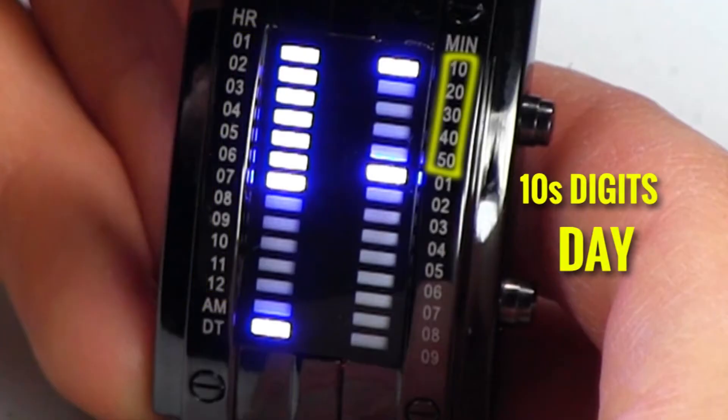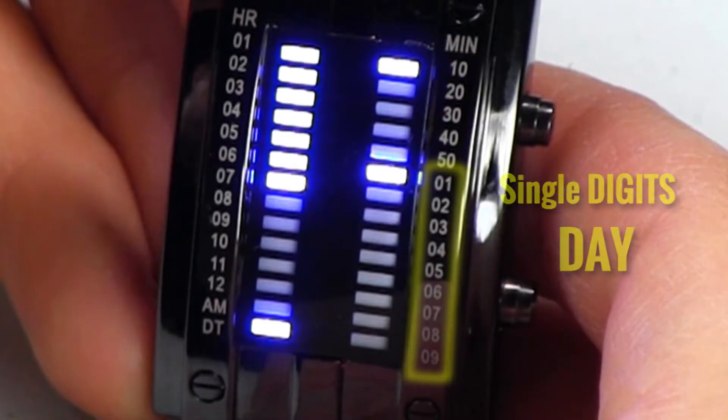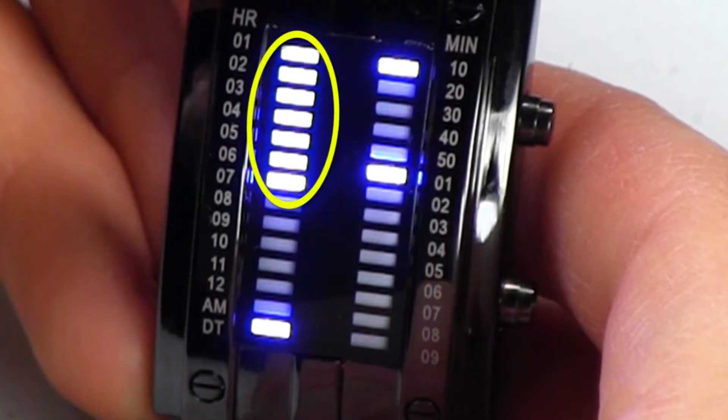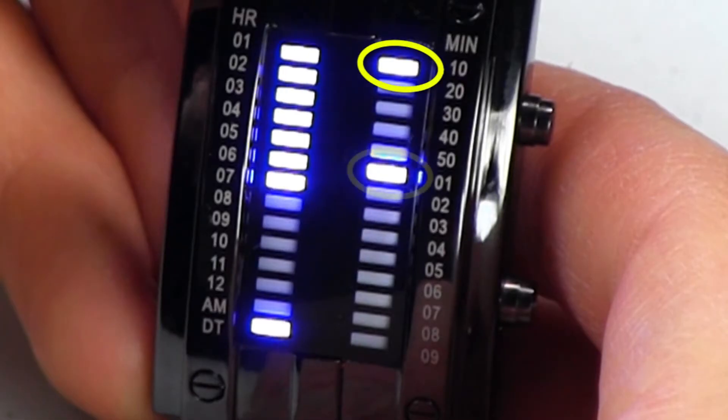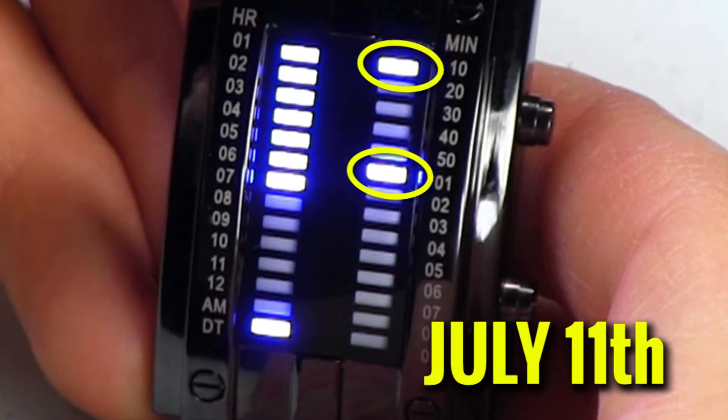On the right, you have the first five numbers as the tens digit and then the numbers below it as the single digit. So you'll see the lights go up to seven here, which means it's July. And on the right, you see the 10 and the one lit up, which means it's 11. So it's showing that it is July 11th.